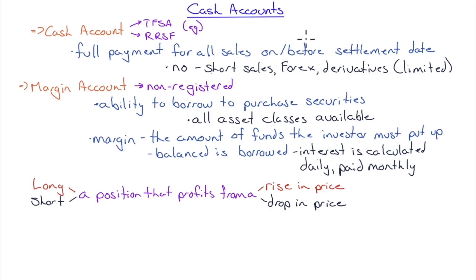Let's look at cash accounts. TFSAs and RRSPs are cash accounts — you can only buy what you have money to buy, no borrowing. Full payment for all purchases is required on or before the settlement date. There are no short sales in a cash account, no forex, and no or very limited derivatives.